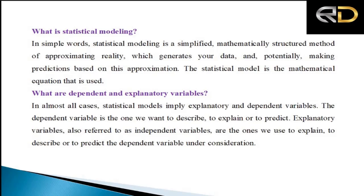For example, consider area and production: production is the dependent variable and area is the independent variable. Similarly, for disease incidences, infection may be the independent variable and recovery will depend on infection, making recovery the dependent variable.